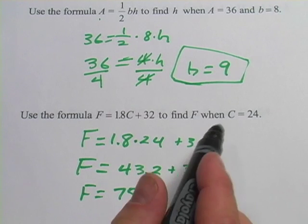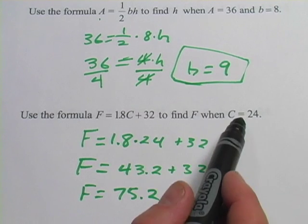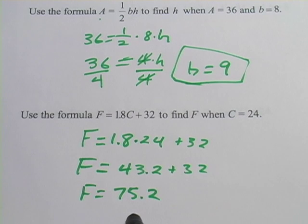So basically what this is saying, if your thermometer says 24 Celsius, it's a little over 75 degrees Fahrenheit. So those are some problems where we substitute numbers into formulas and solve for a variable.